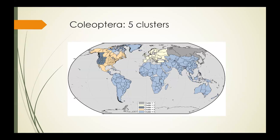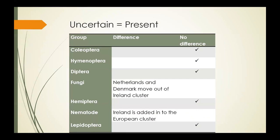In order to investigate the potential for under-recording of species distribution to influence the cluster outcomes, I reran the analysis with all instances of species marked as uncertain recoded to present. The same approach was used as before, and the analysis was rerun, only this time uncertain was now present instead of absent. For the majority, there were no differences in the groups analyzed, with the exception of the nematodes and fungi. For the nematodes, Ireland moved into the European cluster, and for the fungi, the Netherlands and Denmark moved out of the European cluster containing Ireland.